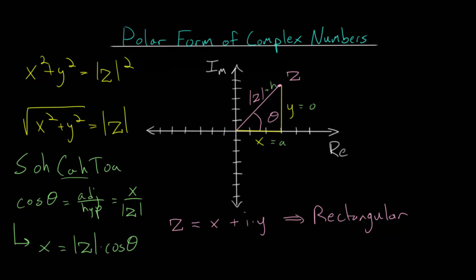And likewise, we can do a very similar process for y, but now involving the sine function. Since the sine of the angle is the opposite divided by the hypotenuse, the opposite side is the y value, the imaginary component, and the hypotenuse is this absolute value of z, its magnitude.